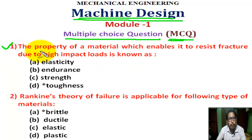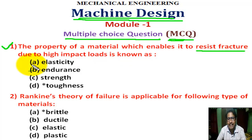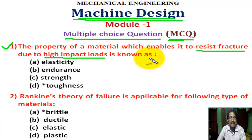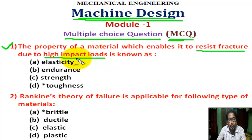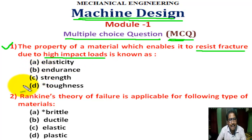Question number 1: the property of a material which enables it to resist fracture due to high impact load is known as — impact load means sudden load applied over a short time period on a structural member. The correct answer is D: Toughness.